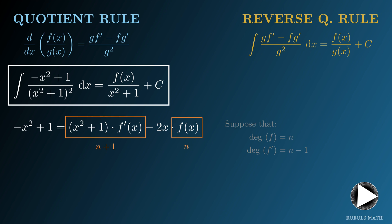Meanwhile, the degree of 2x times f is 1 plus n. Therefore, the degree of the right side is at most n plus 1. Since the left side is degree 2, then n plus 1 is less than or equal to 2.